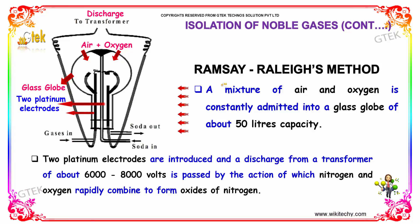This experiment is called the Ramsay's method. A mixture of air and oxygen is constantly passed into a glass globe of about 50 liters capacity. Two platinum electrodes are introduced and a discharge from a transformer of about 6000 to 8000 volts is applied, by the action of which nitrogen and oxygen rapidly combine to form oxides of nitrogen.